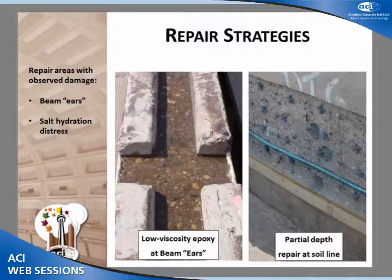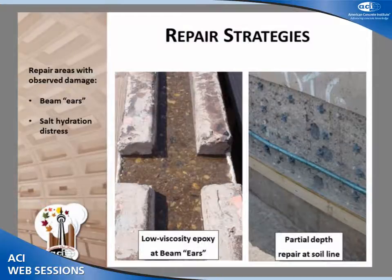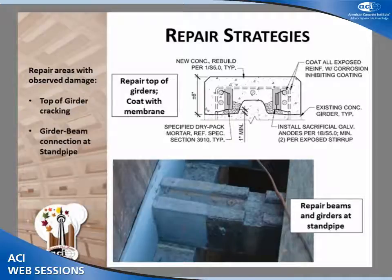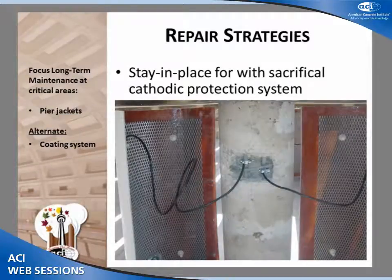For localized repairs, we can gravity-feed epoxy into cracks along the beam ears. In other locations we had to rebuild ears that were completely spalled off. We did a partial depth repair at the soil line around the whole perimeter of the tank, and also applied a coating over that to prevent future sulfate attack. On the tops of the girders where we had 20 to 30% cracking, we removed the chloride-contaminated concrete, installed discrete galvanic anodes, and provided a coating over the top to prevent future chloride ingress. We also repaired the beam ends and the standpipe at the center of the tank.